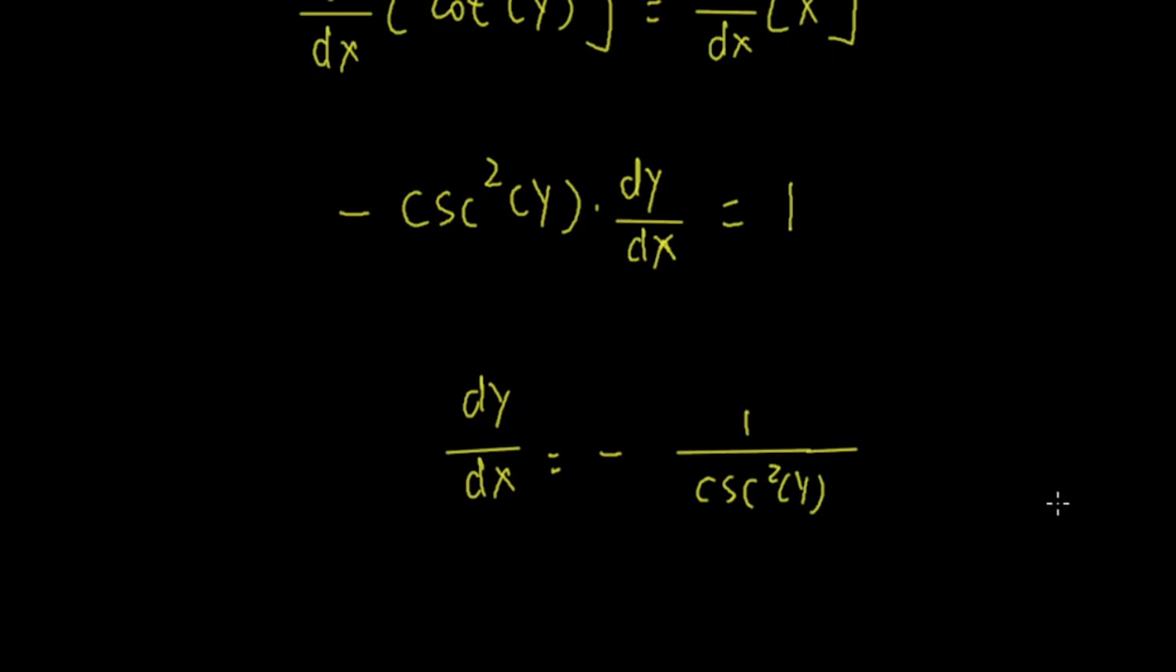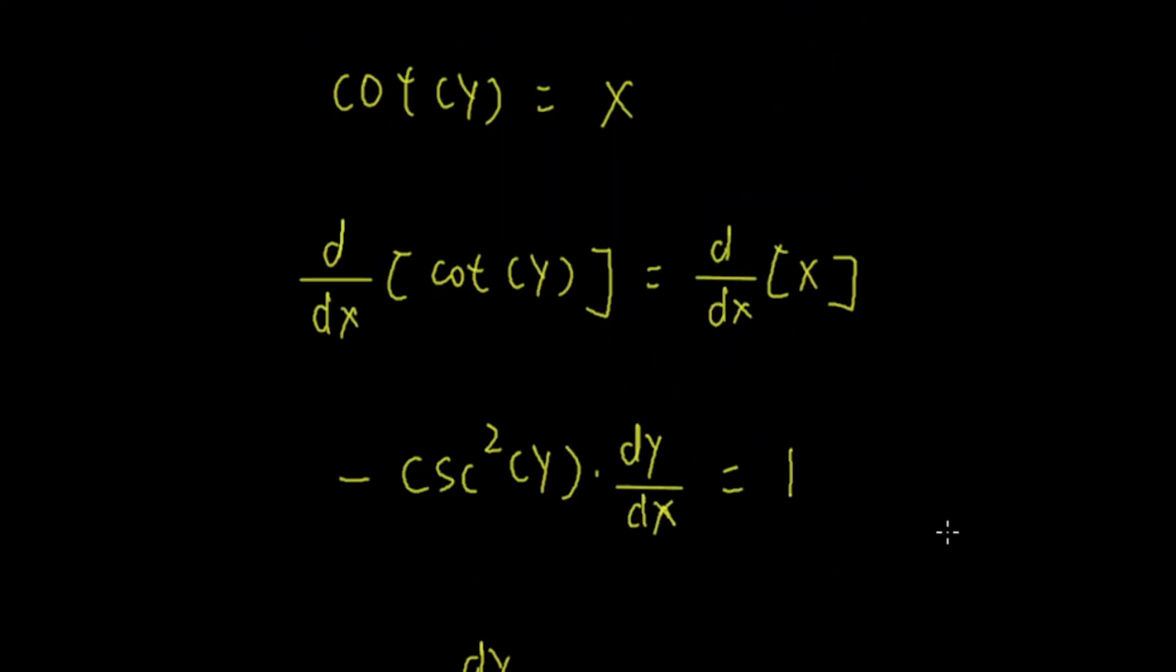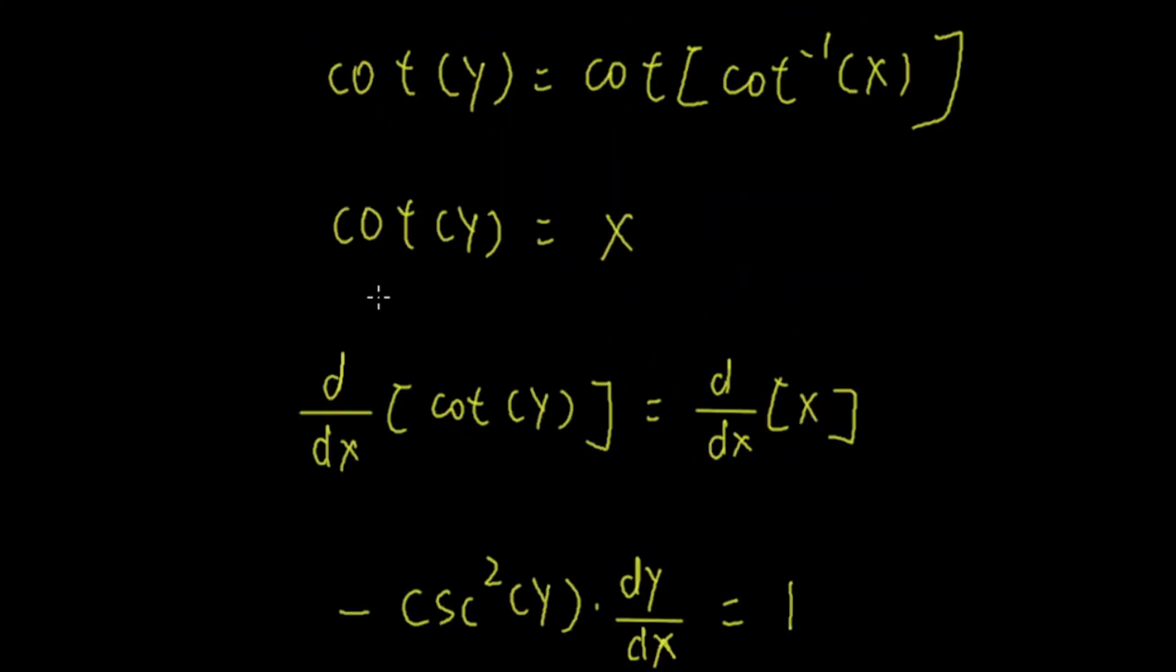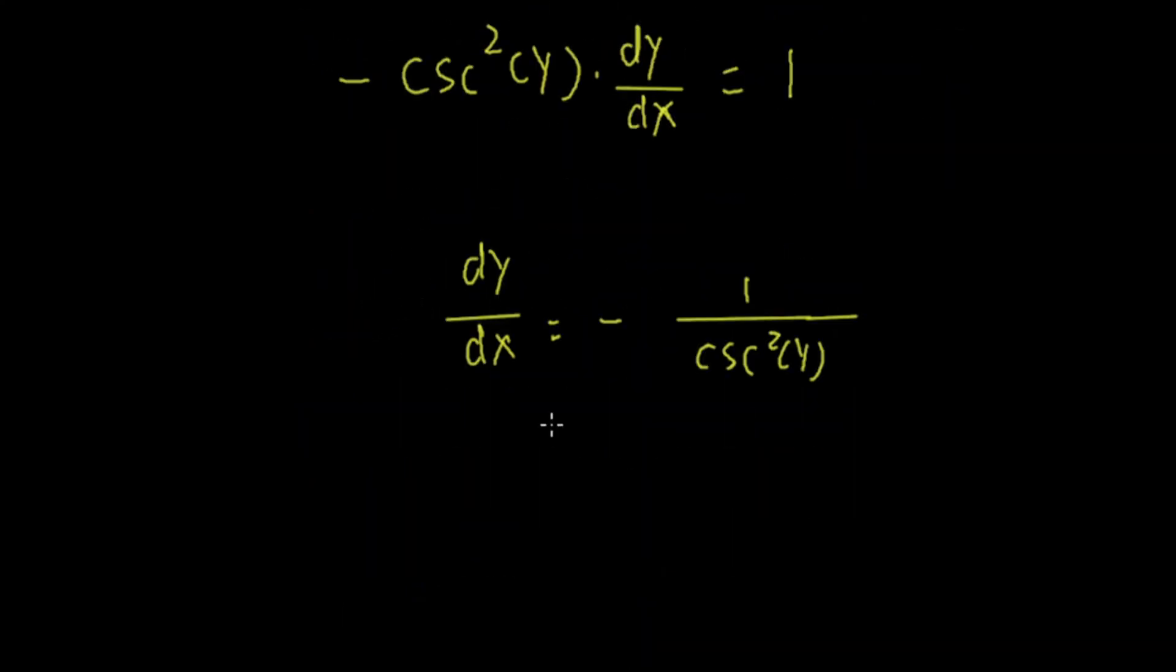But we need to write everything in terms of x, not y. First of all, we know from the beginning that cot(y) equals x. But this is cosecant squared y. So what should we do?